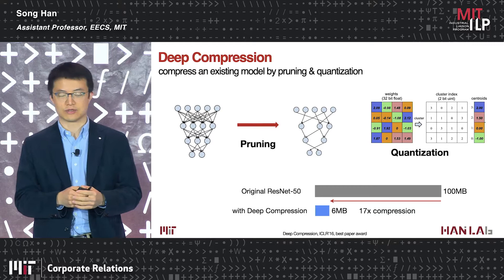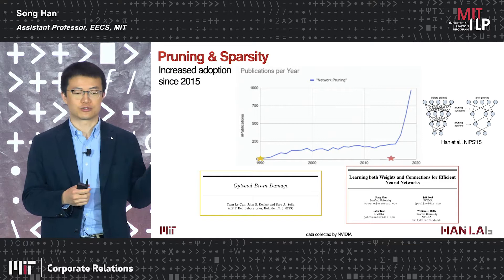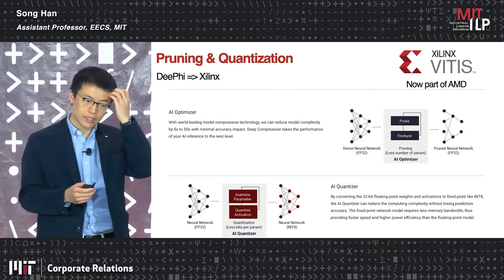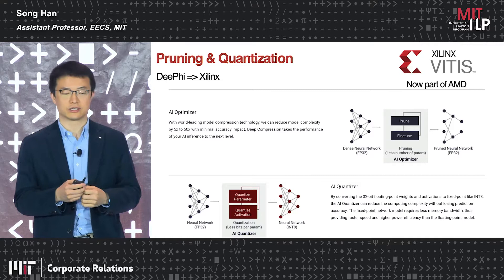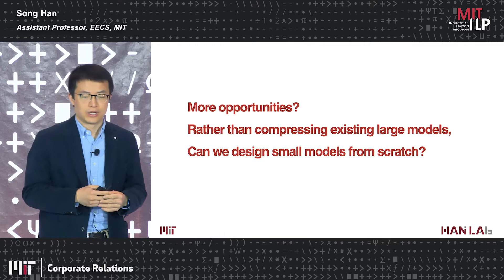Combining these techniques, we can compress ResNet-50 from 100 megabytes to only 6 megabytes without losing any accuracy, facilitating deployment on mobile devices. Pruning and sparsity have seen exponentially growing adoption in both industry and academia since 2015. This technique has also been adopted by DeFi Tech, a startup co-founded previously, now acquired by Xilinx and part of AMD, where they use it to accelerate neural networks on FPGAs.